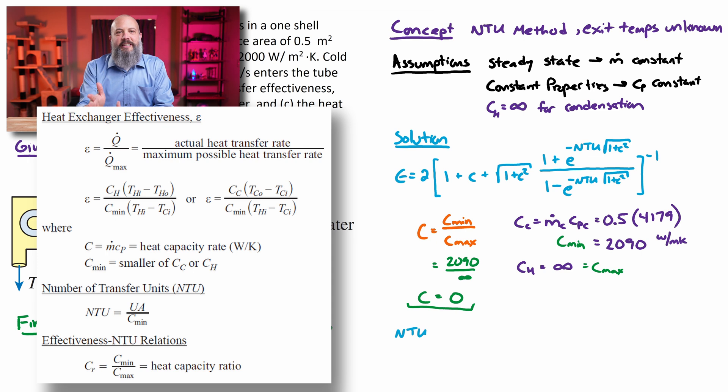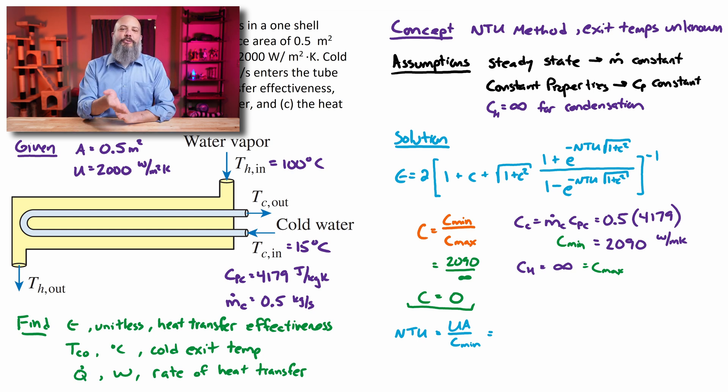So NTU, number of transfer units, is a ratio between UA and CP. Think of the heat transfer equations: M dot CP delta T and UA delta T. Those delta T terms are different. For M dot CP delta T, it's the temperatures within a stream, like inlet versus outlet. For UA delta T, you're comparing the two temperatures that are right next to each other. But NTU is a ratio of the front parts of these equations, UA versus M dot CP. And specifically, the M dot CP, whichever one is lower. NTU is going to be just a value greater than zero.